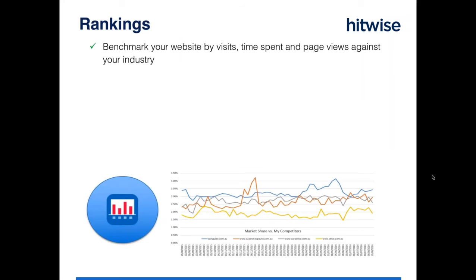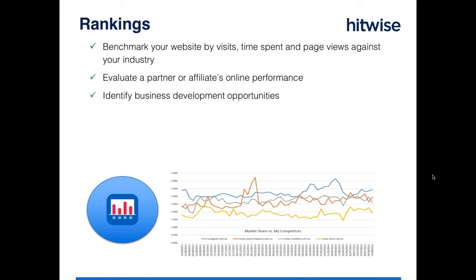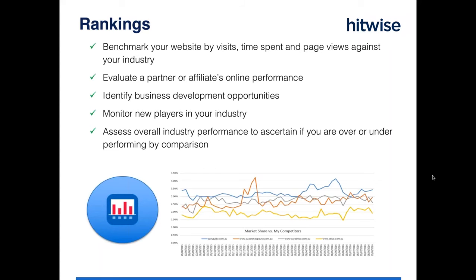Focusing on the different modules today, I'll take you through the uses behind each of them. Rankings allows you to benchmark your website by visits, time spent on sites and page views against your industry. It allows you to evaluate a partner or affiliate's online performance, identify business development opportunities, monitor new players coming into your industry, and assess overall industry performance to ascertain if you are over or underperforming by comparison.